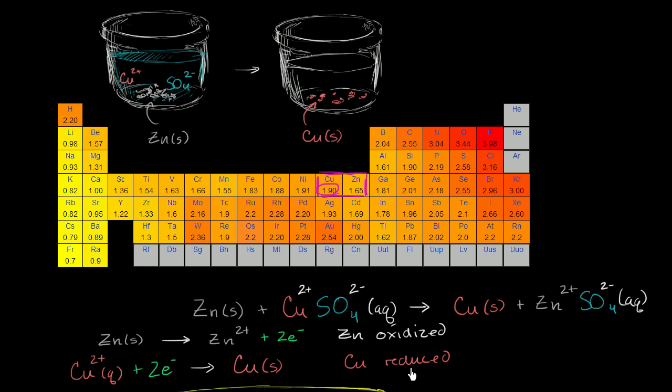Copper reduced by the zinc. The zinc oxidized by the copper. And we see that the sulfate, its charge didn't change. And when you're dealing with an actual ionic compound, the oxidation state is its actual charge. It's not hypothetical anymore.